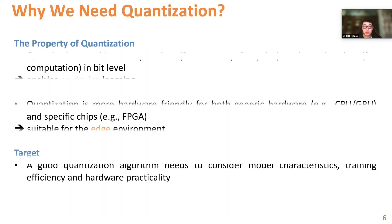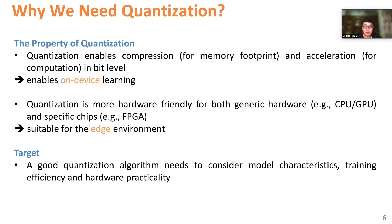Why do we need it? Data quantization holds two key advantages. First, it enables model compression at the bit level, reducing memory footprint and accelerating tensor operations. Second, quantization is more hardware-friendly for both general hardware such as CPU and GPU, and also for specific chips such as FPGAs, making it easily applicable to edge applications.